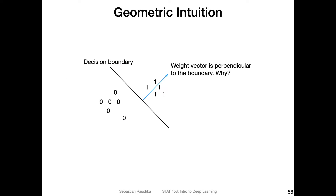Regarding the geometric intuition: imagine you have two classes — class zero and class one — and the black line here is the decision boundary. The weight vector turns out to be perpendicular to the decision boundary. Can you think of why the weight vector would be perpendicular — meaning a 90-degree angle — to the decision boundary? Maybe pause the video and think about it. It's not immediately obvious.